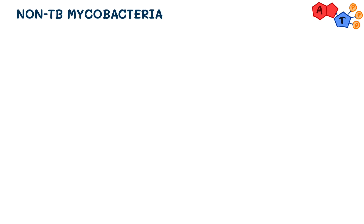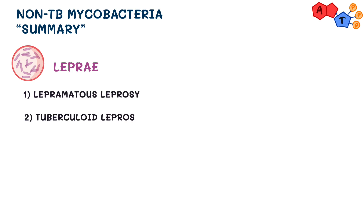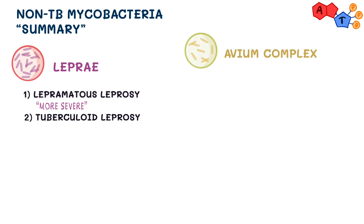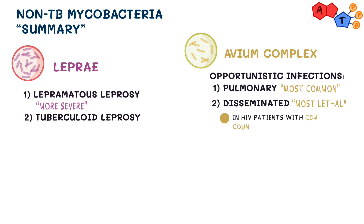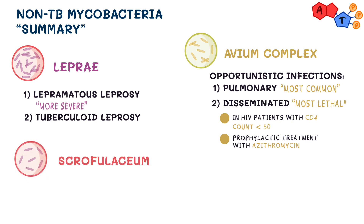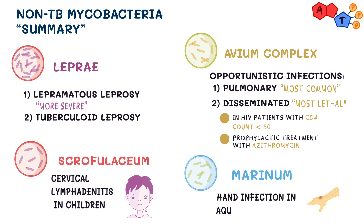We've reached the end of our video. To summarize: Mycobacterium leprae can present in two different ways — lepromatous leprosy and tuberculoid leprosy — with lepromatous being the more severe type. Mycobacterium avium complex causes opportunistic infections, which can also present in two different ways, with pulmonary presentation being the most common and disseminated being the most lethal. The disseminated form presents in HIV patients with CD4 counts less than 50 and should be prophylactically treated with azithromycin. Lastly, Mycobacterium scrofulaceum causes cervical lymphadenitis in children, while Mycobacterium marinum causes hand infection in aquarium holders.